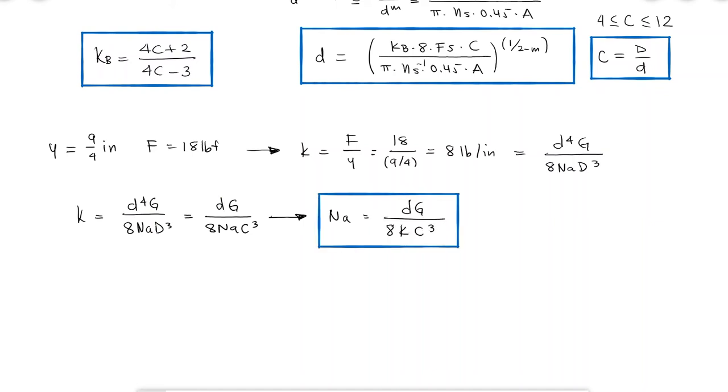Looking up the shear modulus for this Washburn and Moen wire, I find that it's shear modulus 11.5 times 10 to the 6 psi.